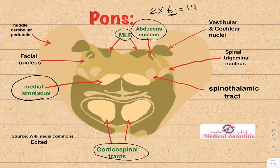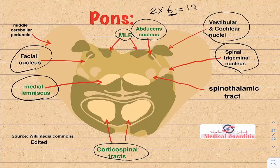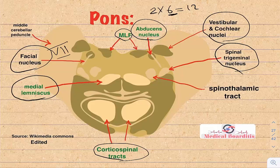On the lateral pons: the vestibulocochlear nuclei — lesion causes problems with hearing and equilibrium; the spinal trigeminal nucleus — lesion causes ipsilateral pain and temperature loss from the face; the facial nerve nucleus (cranial nerve 7 — lateral per our rule); and the middle cerebellar peduncle — lesion causes cerebellar problems.